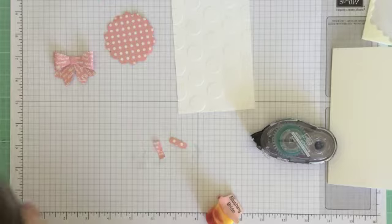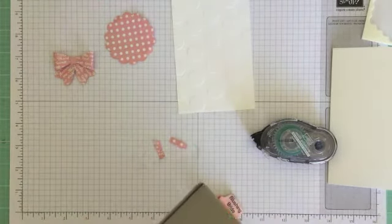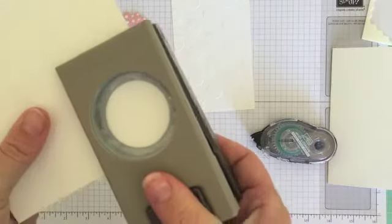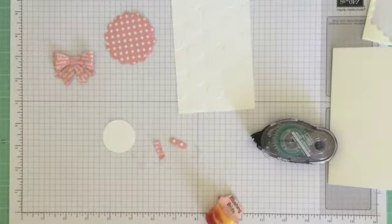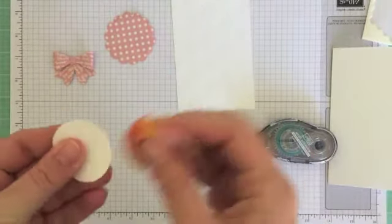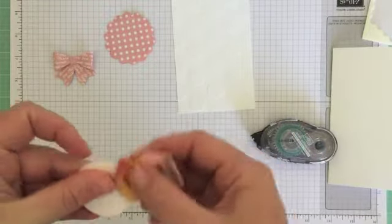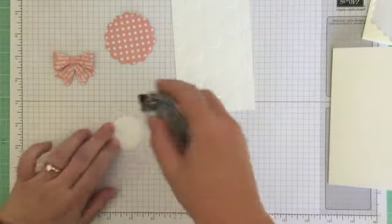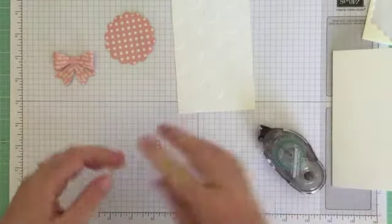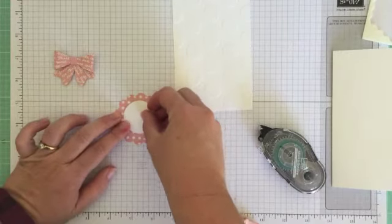Okay, so I'm just going to take next my one and a half inch circle punch and I just want one Whisper White circle and I'll just quickly ink around the edge of that one as well.